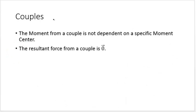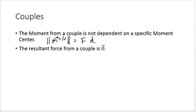What we have just observed about couples gives two important points. The first point is that the moment from a couple is not dependent on a specific moment center. A couple's magnitude is equal to the magnitude of the force of each vector times the perpendicular distance between them. This implies we can change the magnitude of the moment by increasing the force or by increasing the distance between the forces — this does not depend on the moment center.